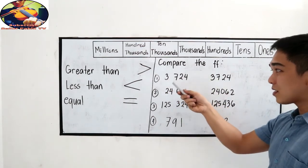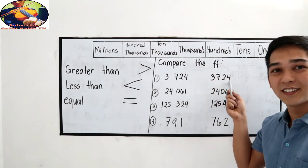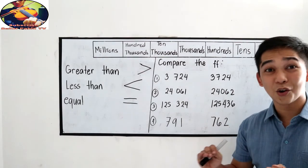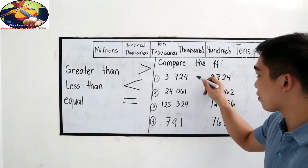We have 2,724 and 3,724. After reading, we notice that they are the same. So they have the same value. So let's use the equal sign symbol.